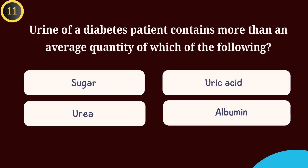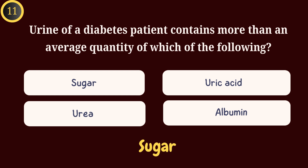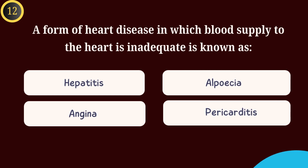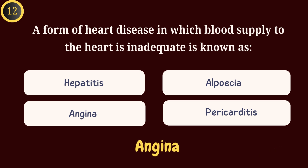Question 11: Urine of a diabetes patient contains more than the average quantity of which of the following? Answer: Sugar. Question 12: A form of heart disease in which blood supply to the heart is inadequate is known as — Answer: Angina.